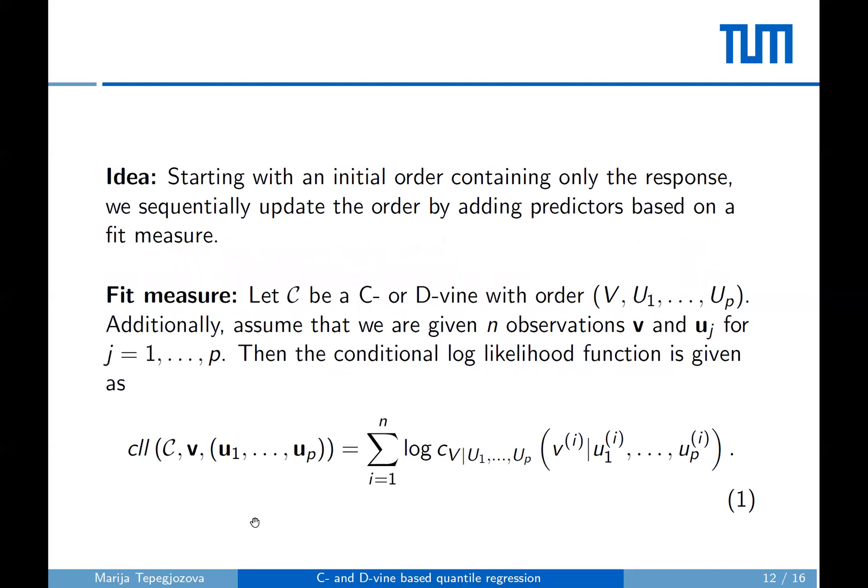Now, the idea to find the optimal permutation is to employ a sequential procedure. Basically, we start with an initial ordering containing only the response. Then, at each step, we add one predictor to the order. We continue to do so until all predictors are included or a stopping criterion is employed. To decide which predictor is to be added at each step, we first need a fit measure. In our case, we use the conditional log likelihood defined in equation 1.